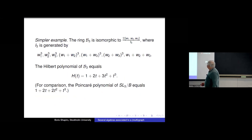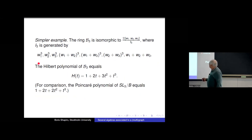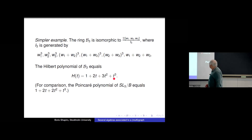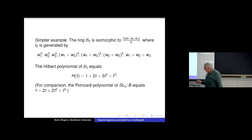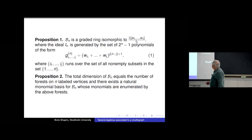Looking at the relations among the wᵢ's: the fourth power of each w vanishes; the sum of any two raised to the fifth power vanishes; the sum of any three raised to the fourth power vanishes; and the sum of all four vanishes. A simpler example: for flags in ℂ³ we have three curvature forms whose sum is zero, and the cube of each and the cube of any two-element sum also vanish. As a result the Hilbert polynomial of the quotient ring is (1, 2, 3, 1), while the corresponding cohomology of the flag space is (1, 2, 2, 1) — there is an extra entry '3' which dies when passing from forms to cohomology.